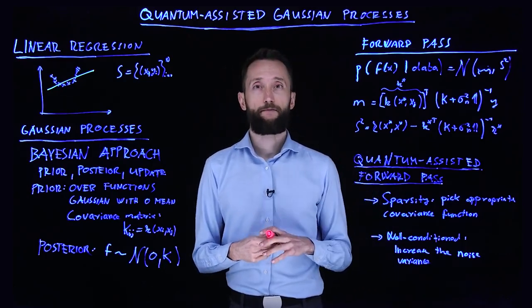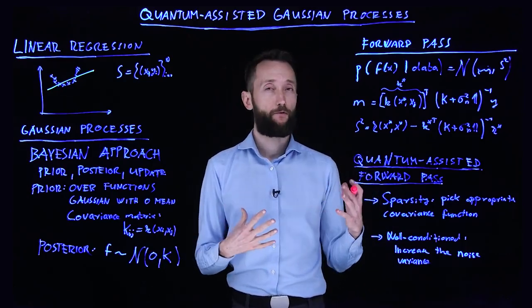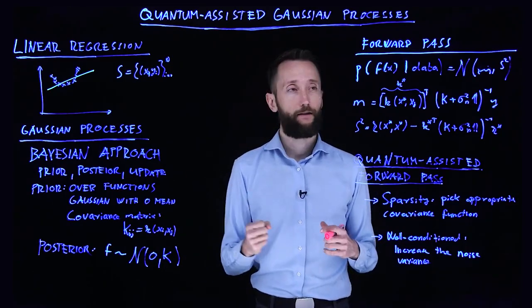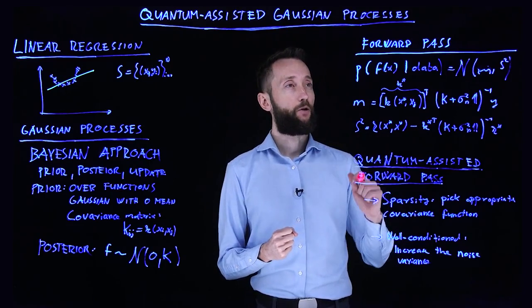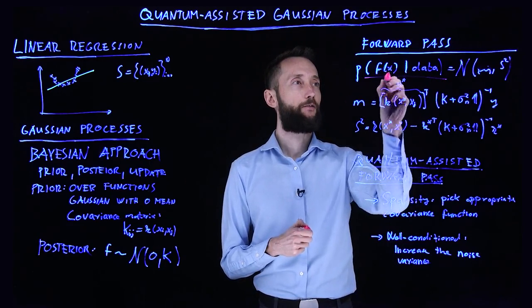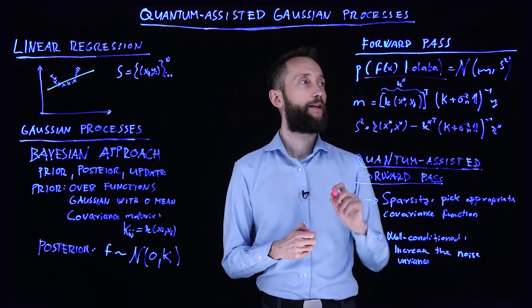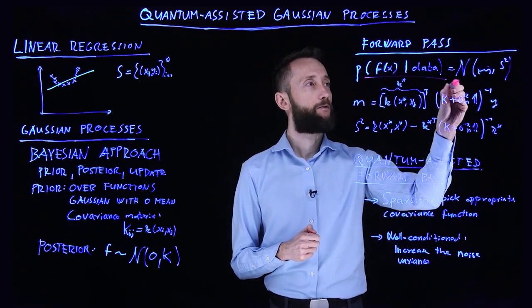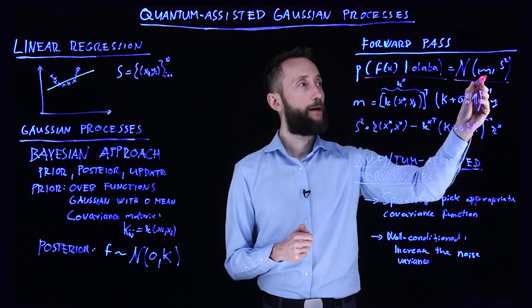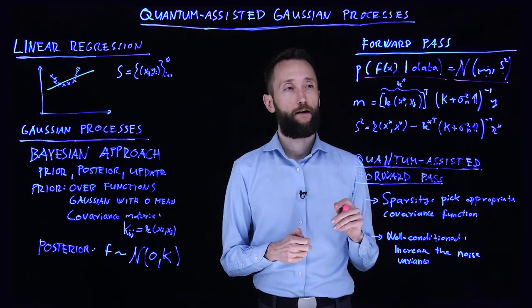And the forward pass, which means calculating the value for some point in the model, is the following. So what you're interested in is getting the value of the function for some data point given the data. And it will also follow a Gaussian distribution.